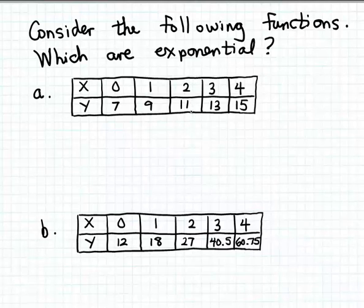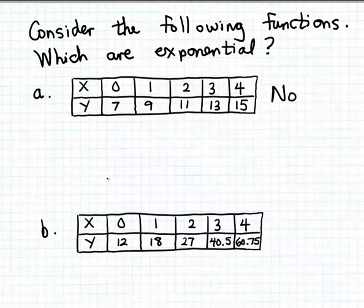So this function in part a is not an example of an exponential function. It is in fact a linear function, because when the input increases by a steady amount, the output is changing by a steady amount — not a steady percentage amount. It is a linear function with slope two.